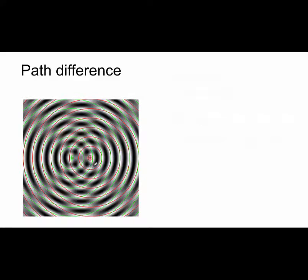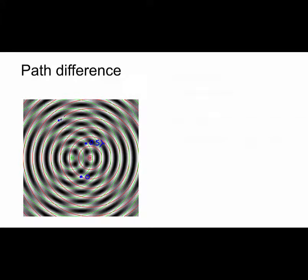Here we have two stones that have been dropped into a pond. For the one on the left, we've highlighted the wavefronts with green lines and the one on the right with pink lines. At this point here, the green waves have travelled a total distance of two wavelengths, and the pink waves have also travelled a total distance of two wavelengths — therefore the path difference is zero. At this point here, the green wave has travelled two full wavelengths, but the pink wave has only travelled one and a half wavelengths — therefore there is a path difference of 0.5 wavelengths. Let's pick another point: the green wave has travelled four wavelengths, the pink has travelled five wavelengths — giving a path difference of one wavelength.